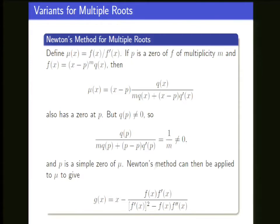The resulting formula looks exactly like Newton except the denominator changes due to the quotient rule on mu. The way to remember it: divide f by f prime and run Newton on that. The drawback is that since we divide by the derivative in the function itself, second derivatives appear in the formula, so you need to know the second derivative.